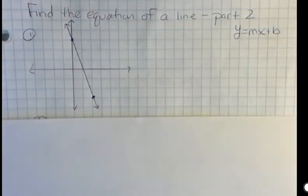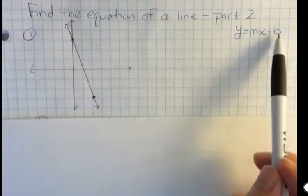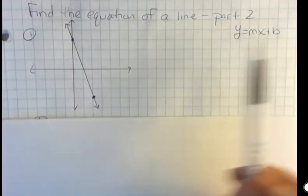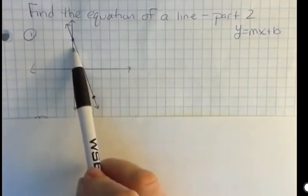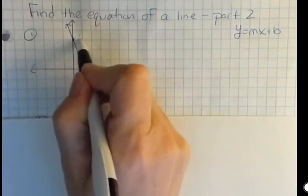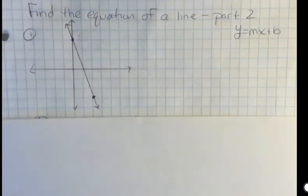So what I'm interested in is finding the equation of a line from a picture, and so I want to know what's my y-intercept. Well, the y-intercept is where the graph crosses the y-axis, so that's one, two, three. So my y-intercept, or b, is going to be three.